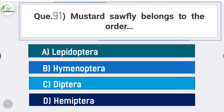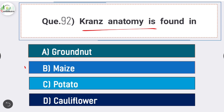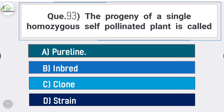Question number ninety: microorganisms which grow at a temperature below 10 degrees Celsius are known as - answer is option A - psychrophiles. Question number ninety-one: mustard saw fly belongs to the order - answer is option B - Hymenoptera. Question number ninety-two: Kranz anatomy is found in maize, which is a C4 plant. Question number ninety-three: the progeny of a single homozygous self-pollinated plant is called - answer is option A - pure line.